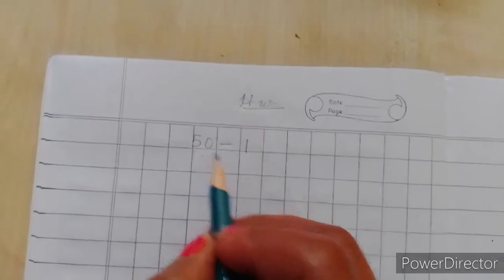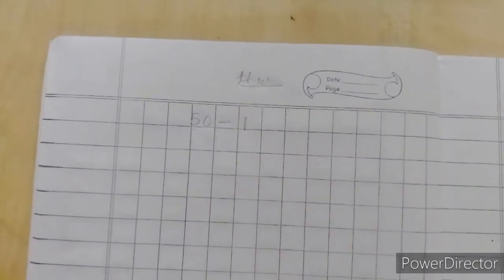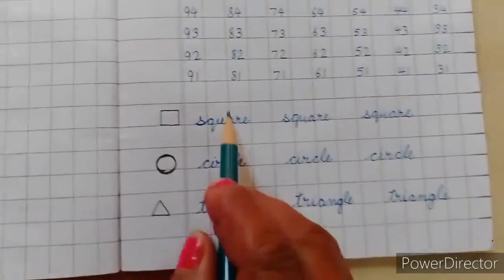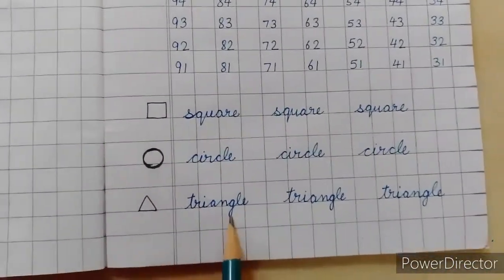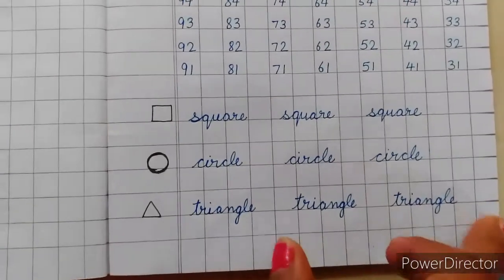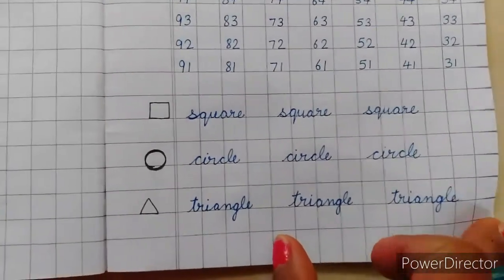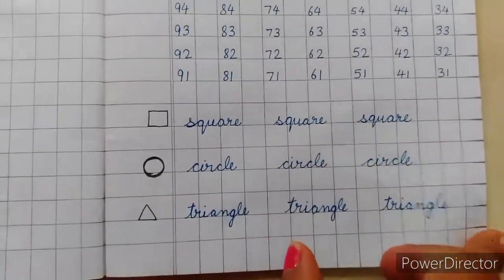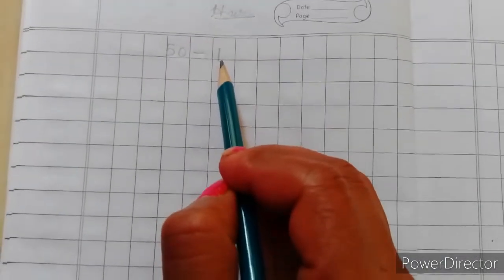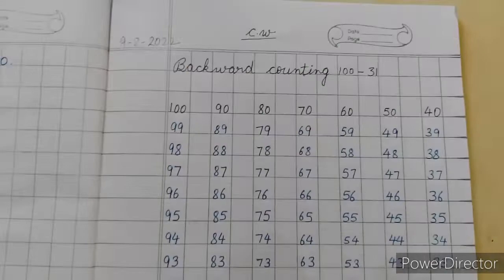Yahan par backward counting karenge. Aur 50 se 1 tak likhani hai aapko. Thikhe kahan se 50 se 1 tak likhani hai. Aur down side ka jo work hai. Jo yeh niche wala work hai. Yeh three spelling jo hai. Yeh aapko as it is aise likhani hai. Thikhe? Sirf counting aapki difference hai. Thikhe? Different hai. To 50 se aapko. Kahan tak likhani hai backward counting? 50 se 1 tak. Okay children? So do it nicely. And learn also carefully.